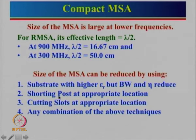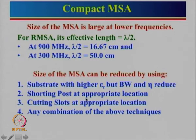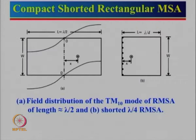One very popular configuration is using shorting posts at an appropriate location. We will see where shorting posts should be placed so that we can reduce the size of the antenna. Another approach is to cut slots within the rectangular, circular, or triangular patch at an appropriate location, so that we can increase the path length and hence reduce the size of the antenna. Another possibility is to use a combination of all the above techniques.